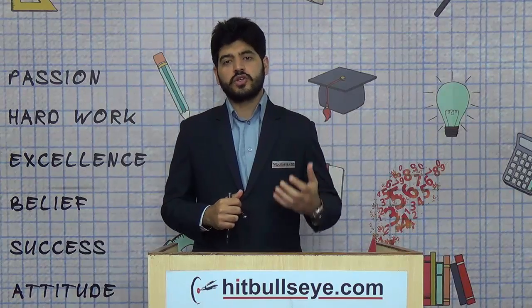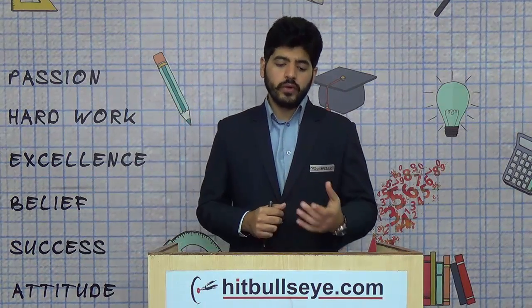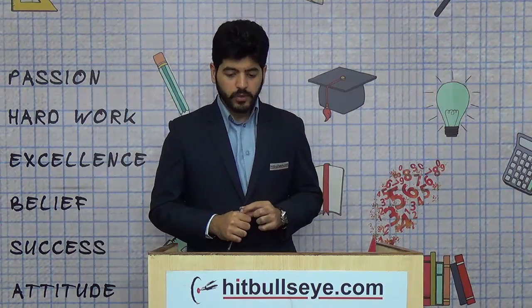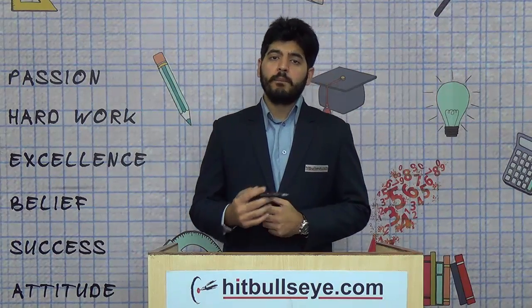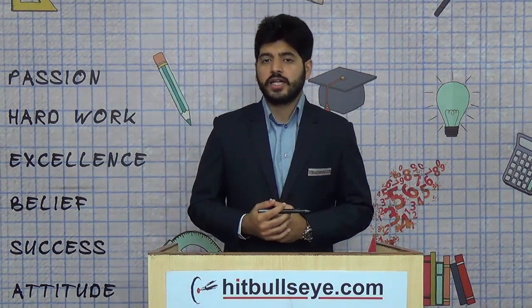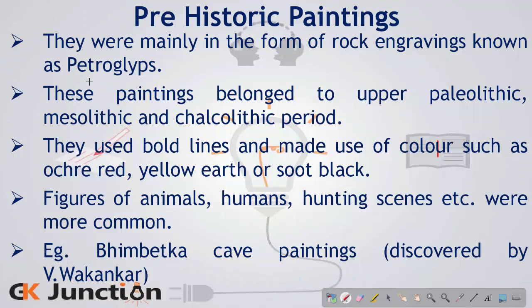Now talking about the various types of paintings — prehistoric, Gupta, Mughal, and others — we will start with prehistoric paintings. Prehistoric paintings were of the mural type, being very large scale, and were basically petroglyphs, which are rock engravings upon a particular rock surface. All these prehistoric paintings belong to three periods: the upper Paleolithic, the Mesolithic, and lastly the Chalcolithic period.